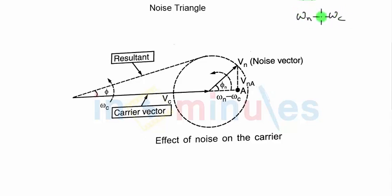Because omega N will not remain constant, this noise vector will keep on rotating at an angular frequency of omega N minus omega C. And every time we consider a different noise vector, that will be because the phase of the noise will also keep on changing. So as this phi N changes, the noise vector will rotate and the tip of the noise vector will travel through a circle.